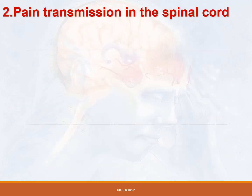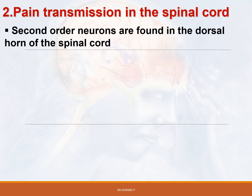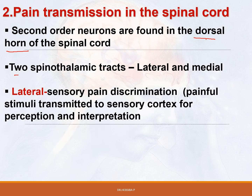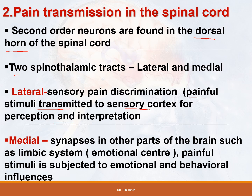The second aspect is pain transmission in the spinal cord. Second-order neurons are found in the dorsal horn of the spinal cord and project via the spinothalamic tract, which has lateral and medial components. In the lateral spinothalamic tract, sensory pain discrimination occurs — painful stimuli are transmitted to the sensory cortex for perception and interpretation. In the medial spinothalamic tract, the signal synapses in other parts of the brain such as the limbic system, the emotional center, where painful stimuli are subjected to emotional and behavioral influences.